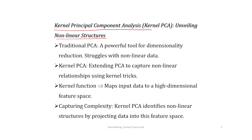The traditional principal component analysis is a powerful tool for dimensionality reduction, but we can use it just when the hidden structure of the data is linear, and it struggles with non-linear data. If the data are concentrated around some non-linear feature space, then linear PCA fails to provide appropriate results. In kernel PCA, we extend the classical PCA to capture non-linear relationships using kernel tricks.